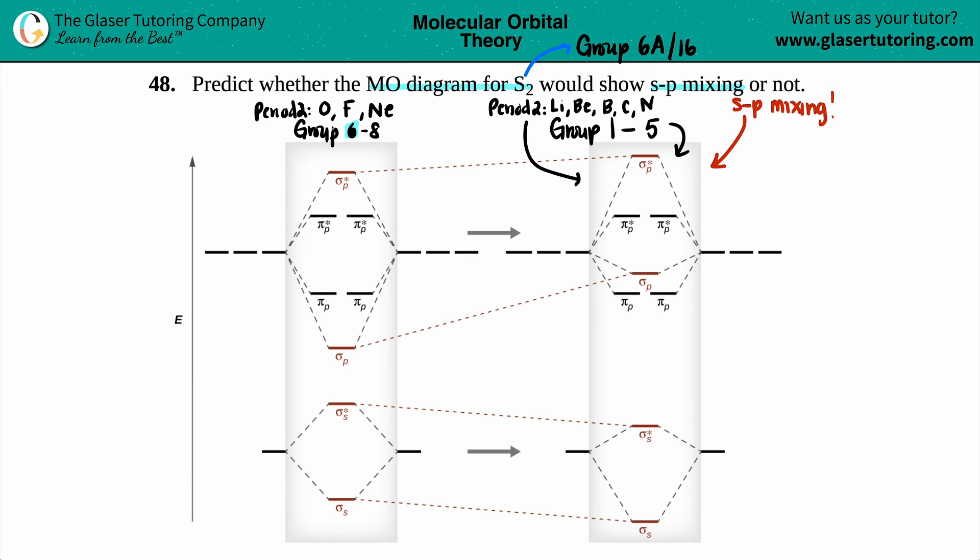So if you're in group 6, whether you're in period 2 or period 3, it doesn't matter. Just as long as you're in that group, you will not show sp mixing. This is the one where your orbitals are going to be mixed up and it's not going to be symmetrical. So predict whether the molecular orbital diagram for S2 would show sp mixing or not - it would not. It would not show sp mixing.